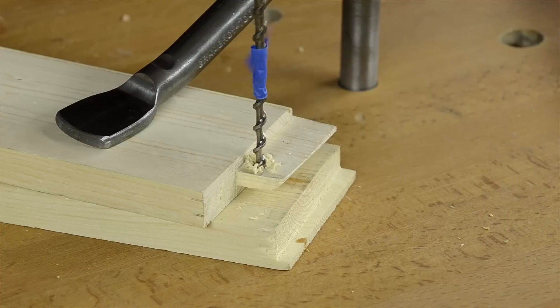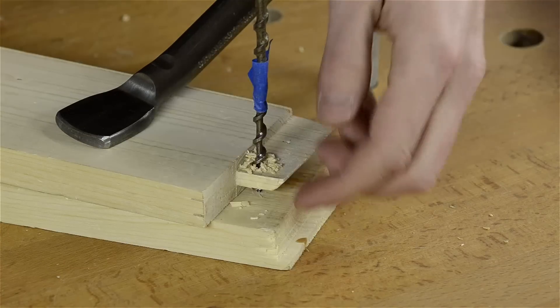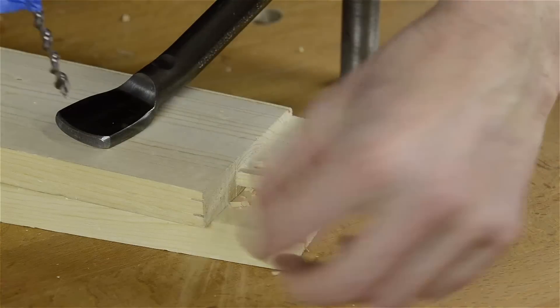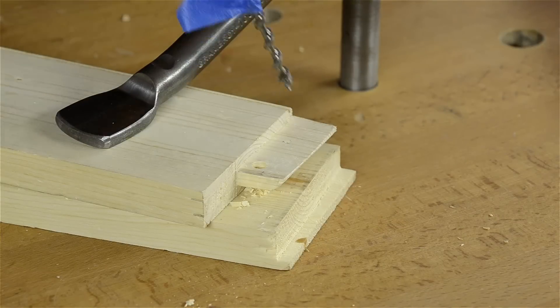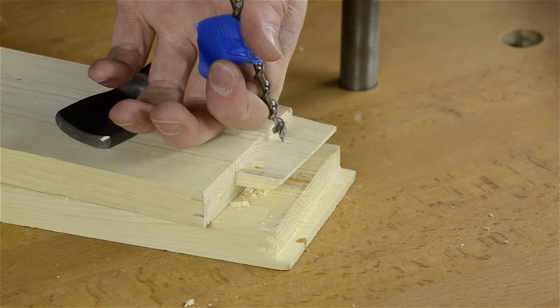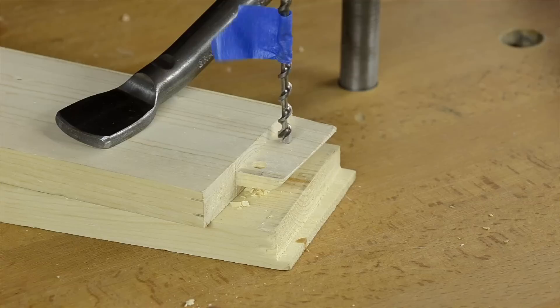And then drill down through with your auger. And I don't like to punch all the way through, or I guess it doesn't really matter. But if you want to be a little nicer, you can just once it starts coming through the other edge, you can stop when the lead screw comes through and flip it around.